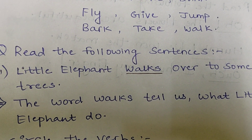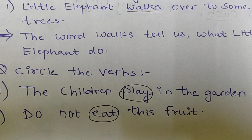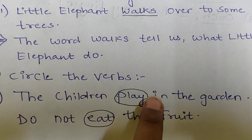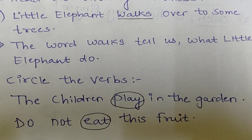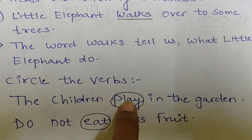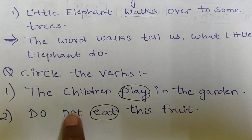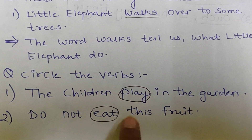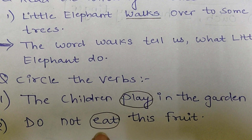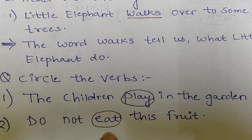Similarly, let's circle the verb. The children play in the garden. Children क्या कर रहा है? Play. Play क्या है? Verb. Next: Do not eat this fruit. Fruit को क्या नहीं करना है? Eat नहीं करना है. To eat is a verb.